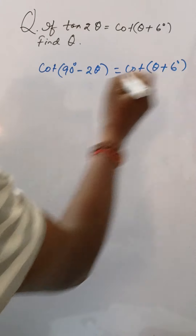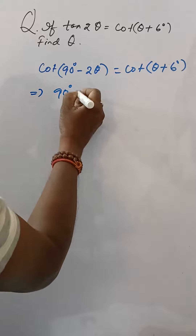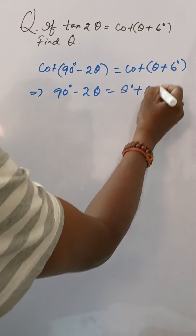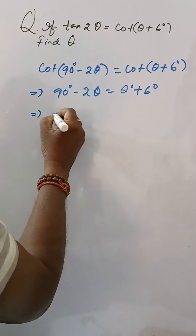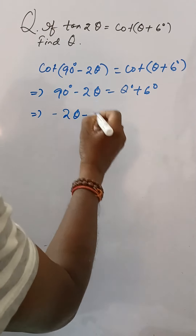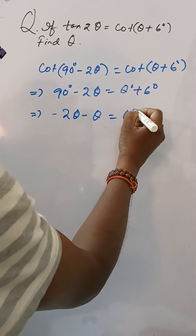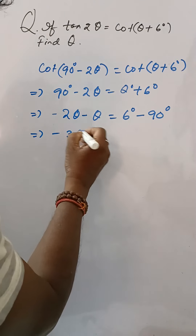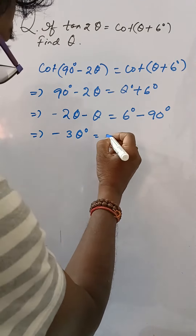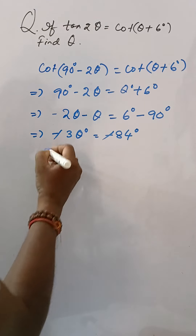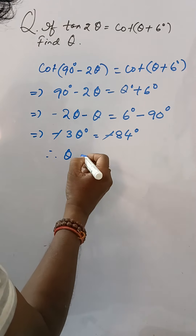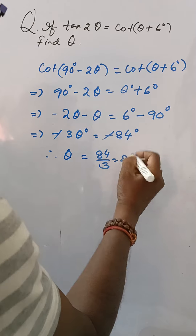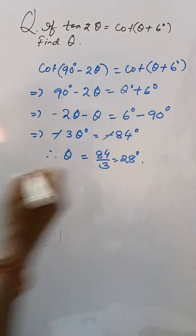Then 90° - 2θ = θ + 6°. Rearranging: -2θ - θ = 6° - 90°, so -3θ = -84°. The negatives cancel, therefore θ = 84 ÷ 3 = 28°.